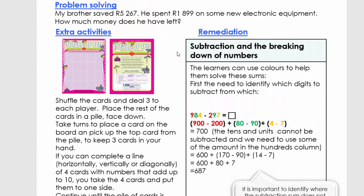Let's come to the problem solving. I gave you tips previously on how to add, subtract, multiply, or divide to solve a problem. You need to identify your numbers. My brother saved 5,267 and spent 1,899 on some new electronic equipment. How much money does he have left? The word 'left' gives us an indication that we need to subtract.